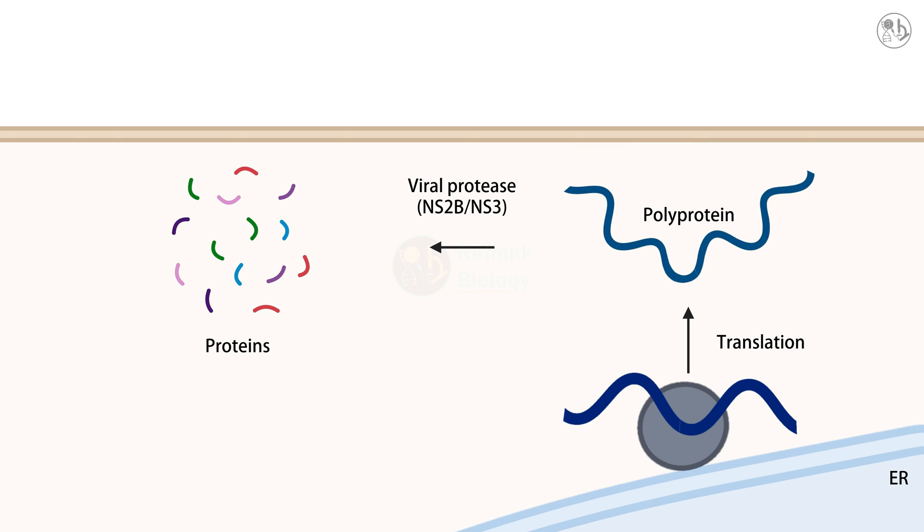The RNA is then translated by the cell's ribosomes, producing a long polyprotein that is cleaved by the viral protease NS2B or NS3 into individual proteins. The viral RNA is copied by the viral polymerase NS5, producing a negative strand RNA that serves as a template for more positive strand RNA.